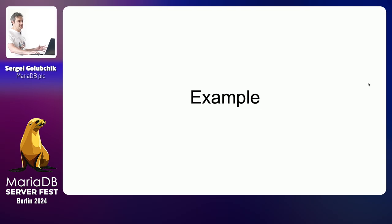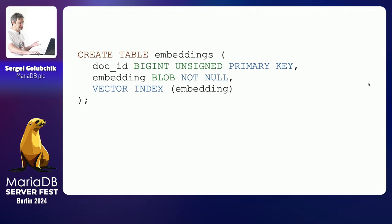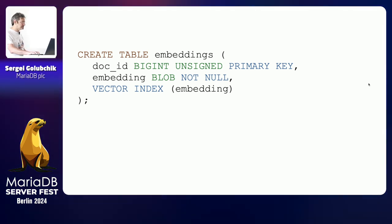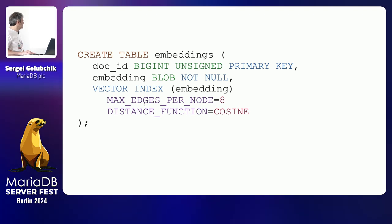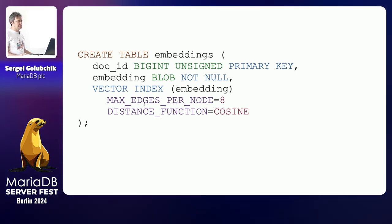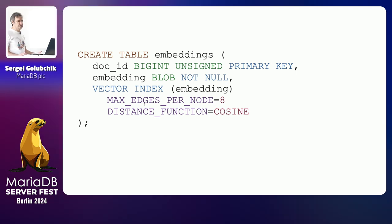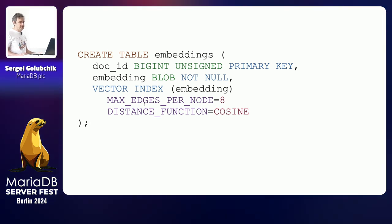In MariaDB, first you create a table — it's a database, you store data in tables. There's no vector type at the moment, so you just use blob and create a vector index. You can specify parameters when creating a vector index which affect how fast or slow it will be, how approximate or precise it will be, and the distance function. For text, cosine is most used and works best; for images, euclidean generally works well, but it really depends on your problem area.